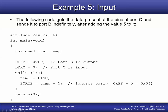Inside the infinite while loop, we have an 8-bit variable called temp — we don't need more than 8 bits because Port C is an 8-bit register. PINC is the register where the values of the input pins are stored, indicating whether each pin is at high or low voltage. For example, if a 5-volt supply is connected to Port C pin 3 and all others are grounded, PINC will have a 1 in bit 3 and zeros elsewhere. That value is assigned to temp, we add 5 to it, and then assign the result to Port B.